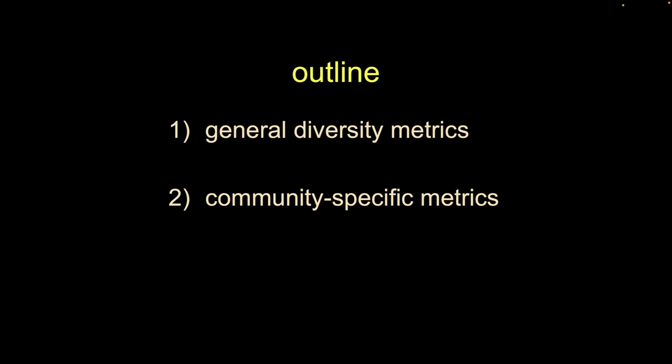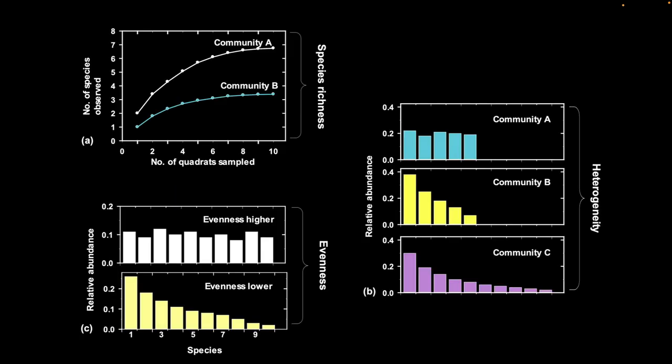Before we start talking about diversity, I want to outline some general diversity metrics — mostly what you'd do as a conservation biologist or consultant. The take-home today is we want to talk about three primary fundamental characteristics of diversity: richness, evenness, and heterogeneity. We'll talk about each of those in turn.